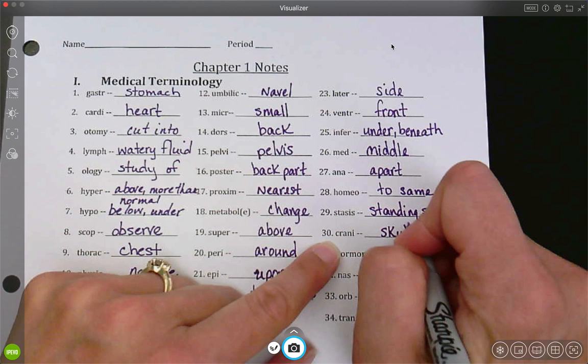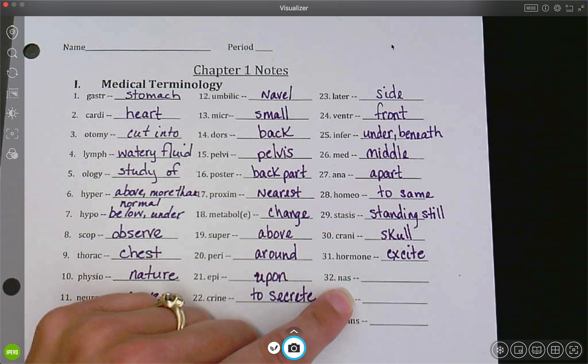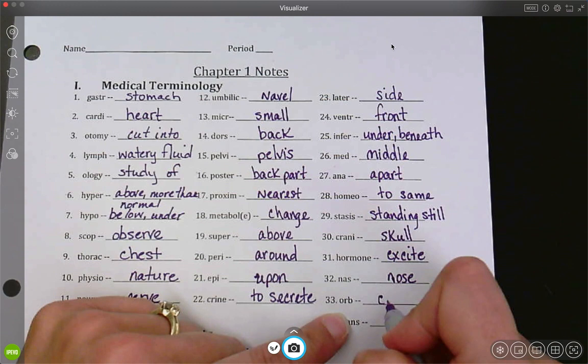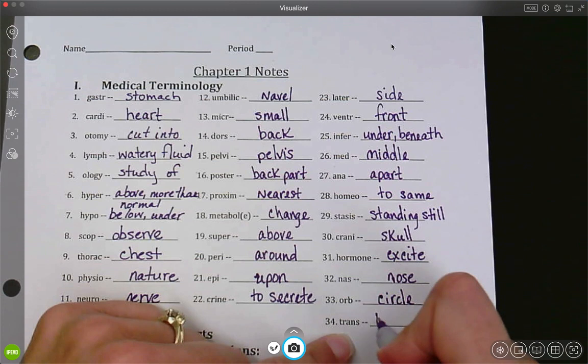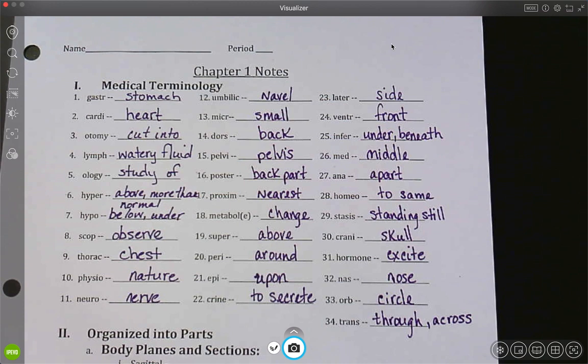Crani, like your cranium is your skull. Hormones excite. So like teenagers have lots of hormones, it gets those boys and girls all excited. Nares is nose, like nasal spray. Orbital is circle. Those you should be familiar with. And trans is through, across. So when we talk about transverse goes across the body, transportation is going to take you across the city. That's all for today.